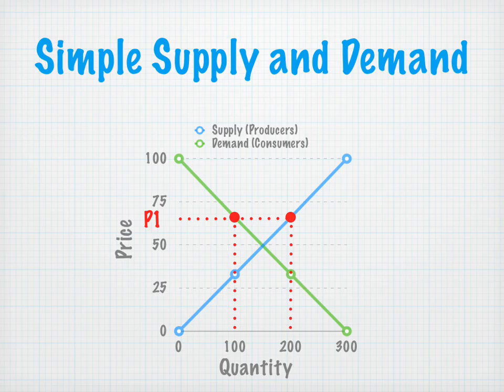They're willing to make 200 of a certain good. For our purposes today, we're talking about Xbox 360 games. So at market price one, consumers at $66 would like to purchase 100 Xbox 360 games, and producers at $66 would be willing to produce 200 Xbox 360 games.